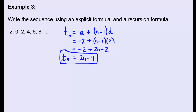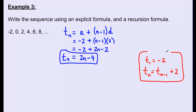Each term can be explicitly found by plugging in the position number. For the recursive formula, the pattern is each term is 2 more than the term before it, so the general term is Tn equals Tn minus 1 plus 2. We also need to include T1 equals negative 2, since that defines where the sequence starts. Together, both statements form the complete recursive formula.